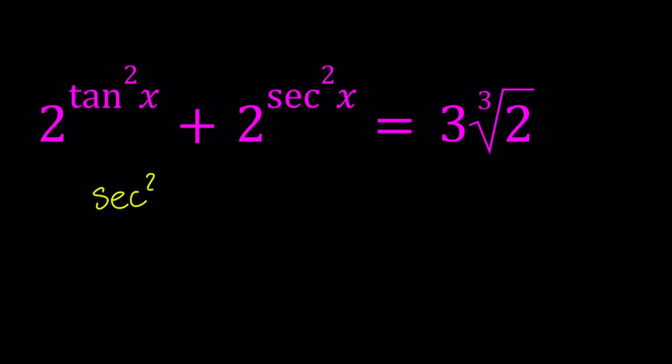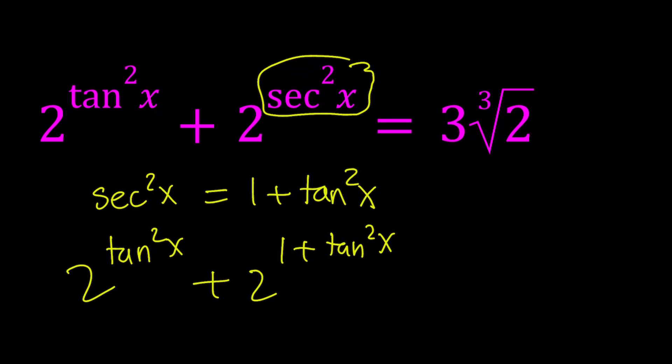Secant squared can be written as 1 plus tangent squared x. So I'm going to go ahead and replace the secant squared with that. Let's see what happens. So 2 to the power 1 plus tangent squared x equals 3 times the cube root of 2.